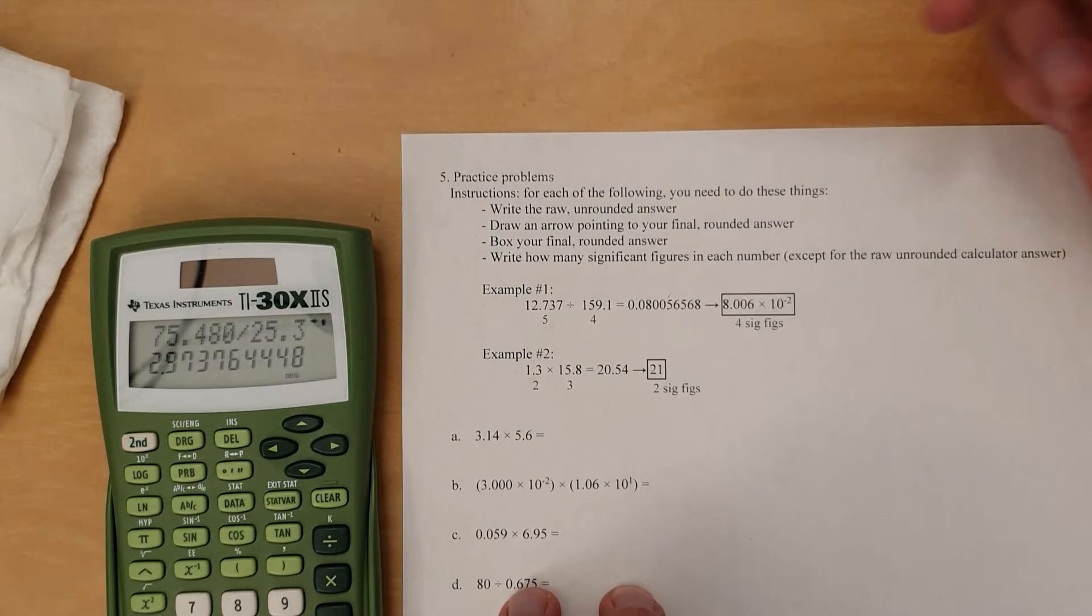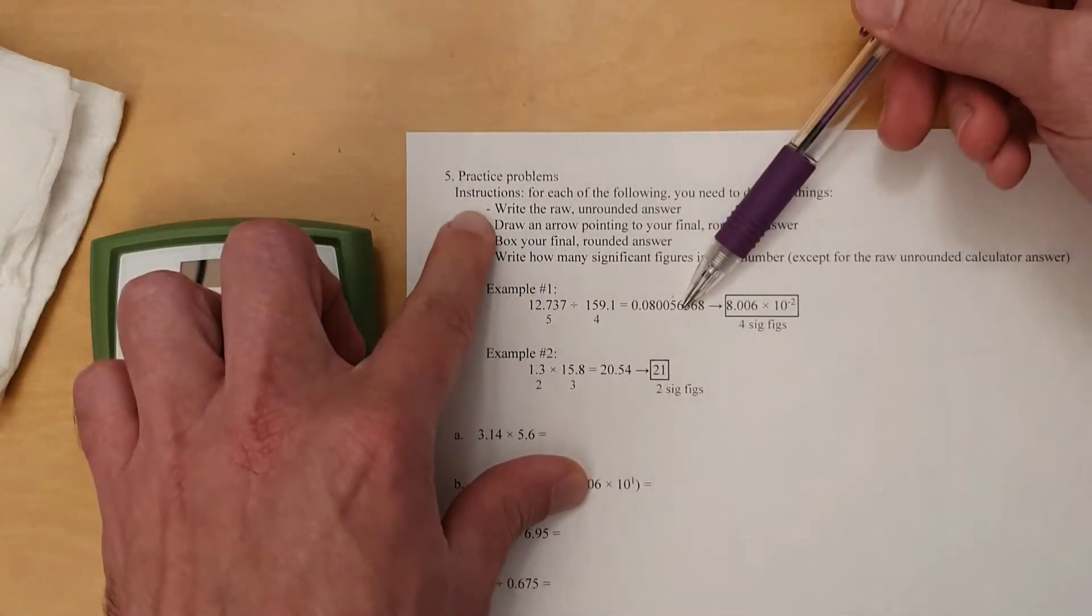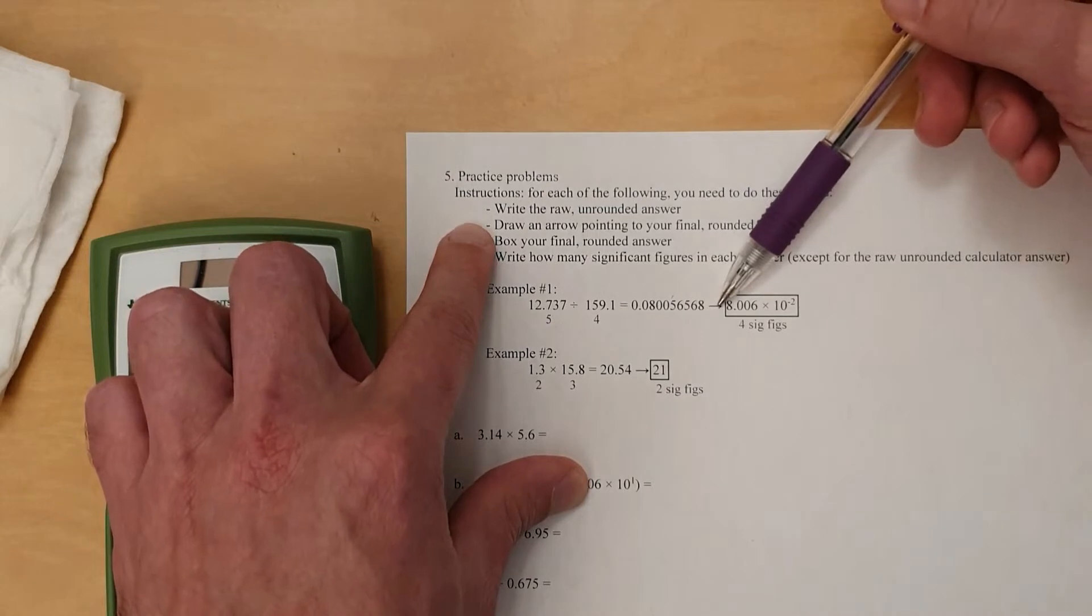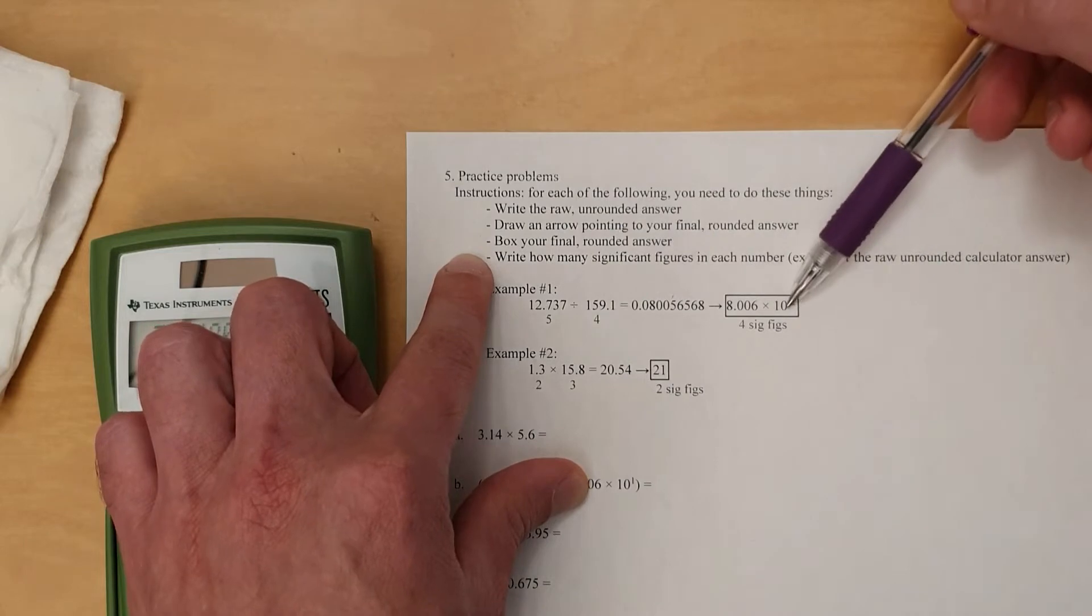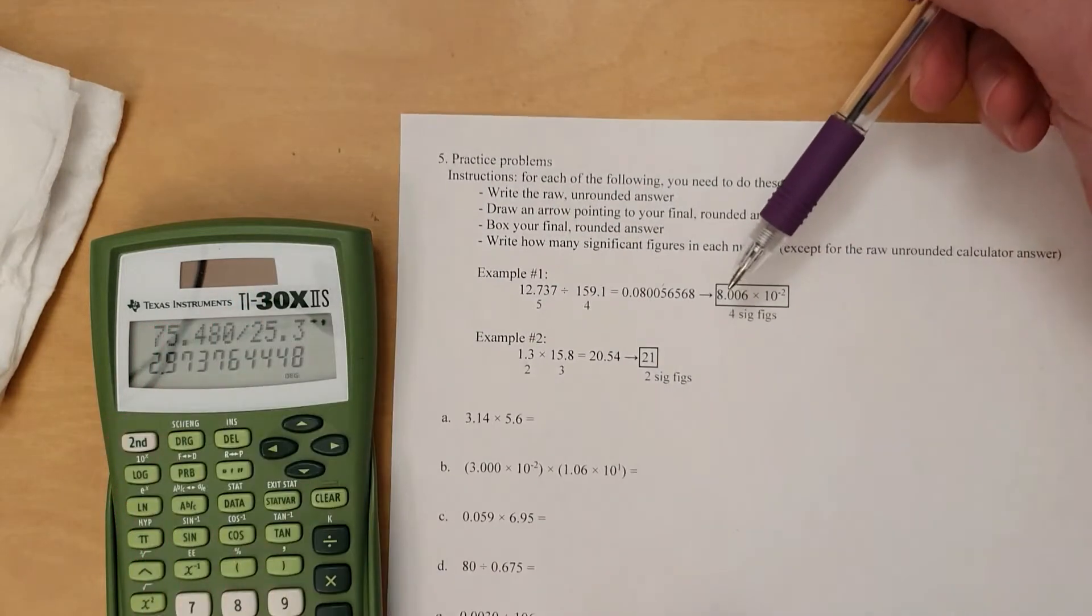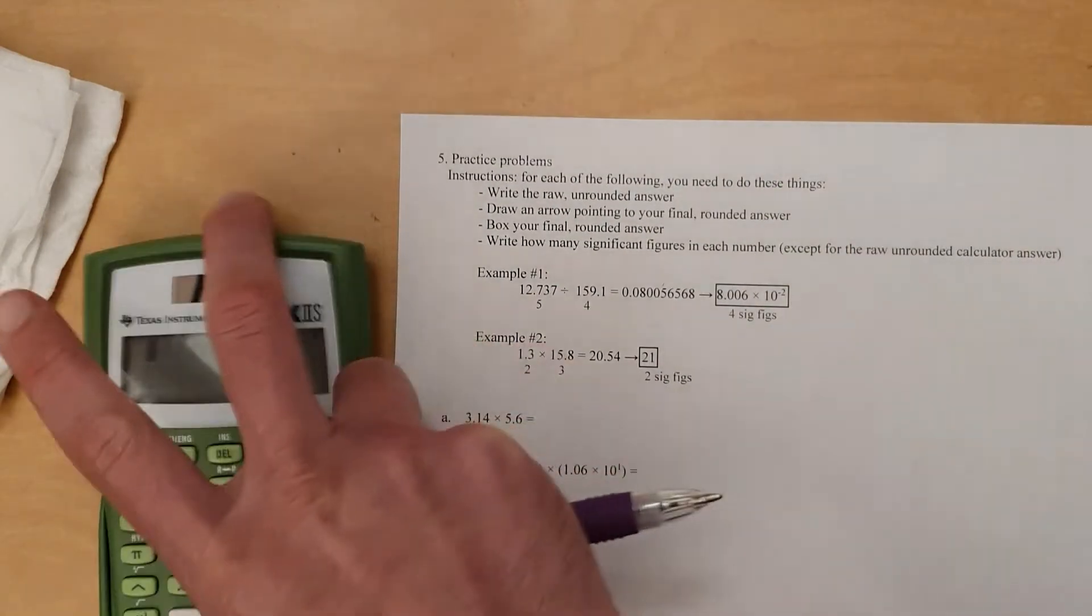All right, next. The way you're going to show your work. You write your raw, unrounded answer. Draw an arrow pointing to the final answer. Box it. And then write how many sig figs for each number. That way we see your thought process.